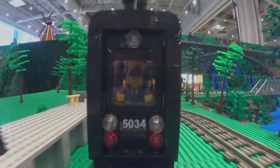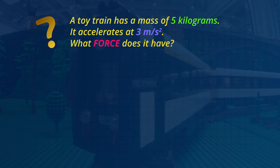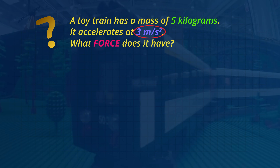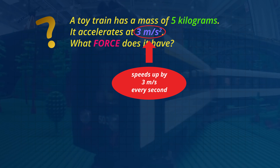If this toy train speeds up even more it will have more force. The toy train has a mass of 5 kilograms and it accelerates at 3 meters per second squared. What force does it have now? A mass of 5 kilograms is the same as 5 liters of water. The train's acceleration of 3 meters per second squared means the train speeds up by 3 meters per second every second, or by about 10 kilometers per hour every second.